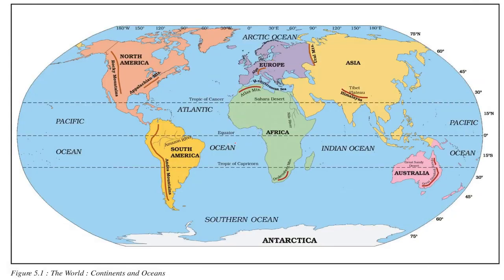Sea level, sometimes called mean sea level, is taken as zero. Looking at the map of the world, it shows the continents and oceans — North America, South America, Africa, Europe, Asia, and Australia.